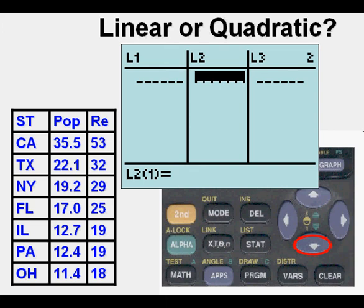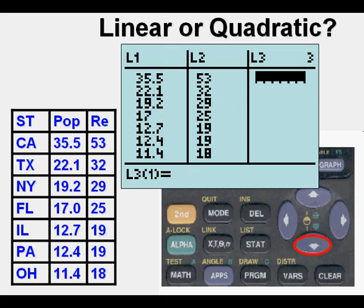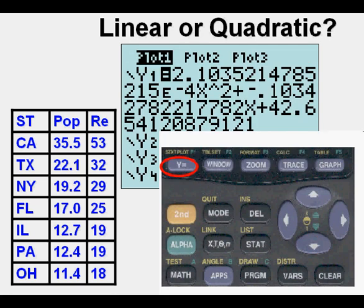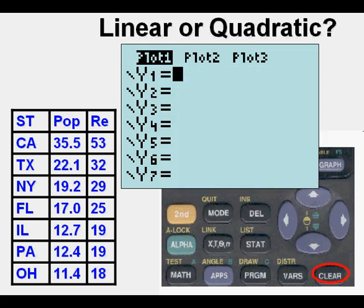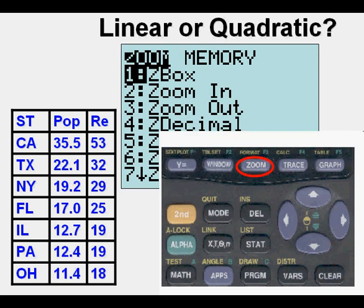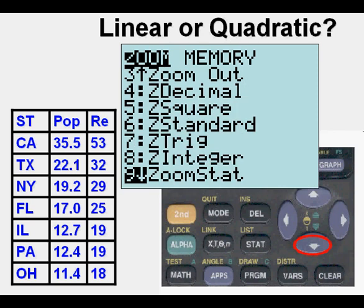So now we can go ahead and enter these seven points from the problem we're currently looking at. And we go to Y equals, and we press clear to clear off the prior function that was earlier calculated. Now we go to zoom 9, and it gives us this relation.